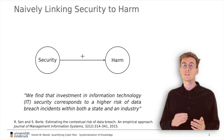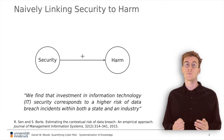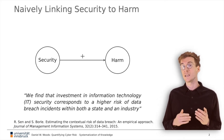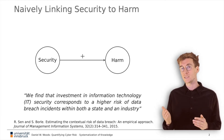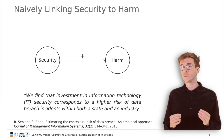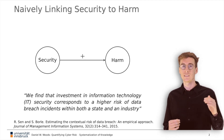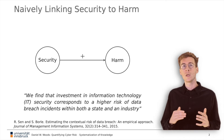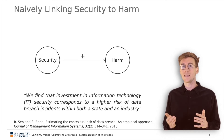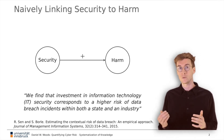Yet in the literature, we find results with the opposite relationship. For example, Zen and Borla find that higher security budgets are associated with higher frequency of data breaches. This seems to contradict our natural law, but we can explain this result via confounding variables.